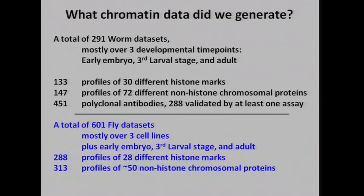Most of this data was from our group. Gary's group, along with some data from Dave, have 601 fly datasets, mostly over three cell lines — they have the advantage of having cell lines, which are not available in worms — plus some whole animal experiments in embryos, larval stages, and adults. They have 288 profiles of 28 different histone marks and 313 profiles of about 50 different non-histone chromosomal proteins. We have a fairly compatible dataset in terms of scope and size.